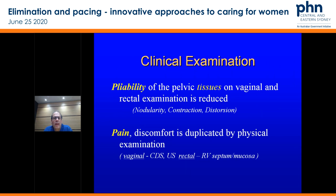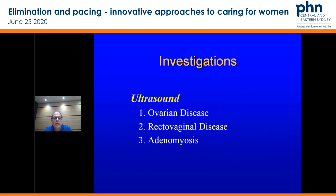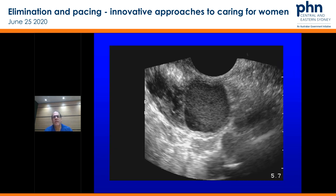Pliability on exam — the pain, the discomfort is duplicated by physical exam. Investigations are pretty simple: we don't have to get down the realm of MRIs and other testing, but ultrasound — we can see ovarian disease, we can see severe recto-vaginal disease, and we can see adenomyosis. That's going to confirm your diagnosis. If you send off your patient and see that ground glass appearance of the ovary or the report tells you there's an endometrioma — well, you've nailed that diagnosis.